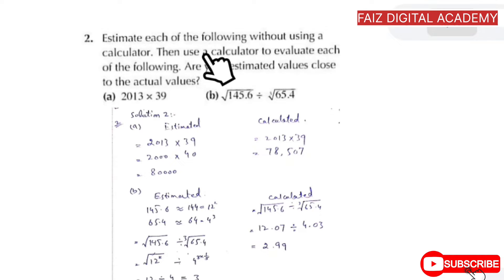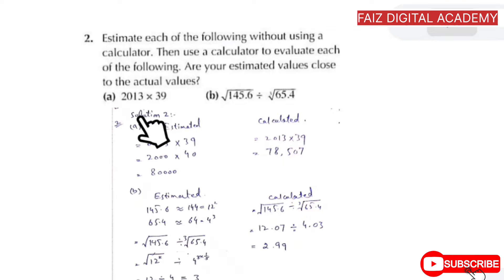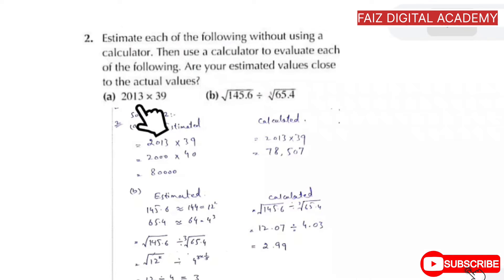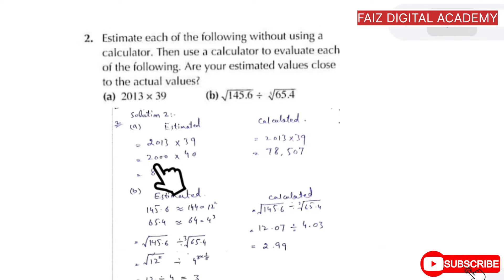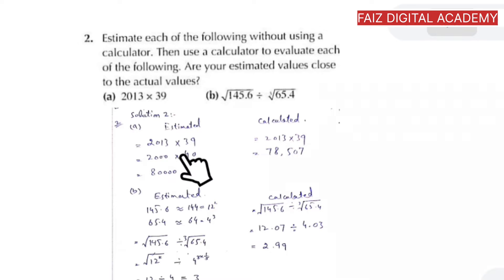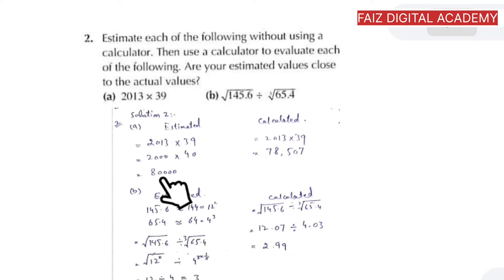In question number two, estimate each of the following without using a calculator. We have to solve this by the estimation method and by the calculator method. For part (a), the numbers are 2013 multiplied by 139. We can round off 2013 to 2000 and 139 to 40, then multiply to get the estimated answer.